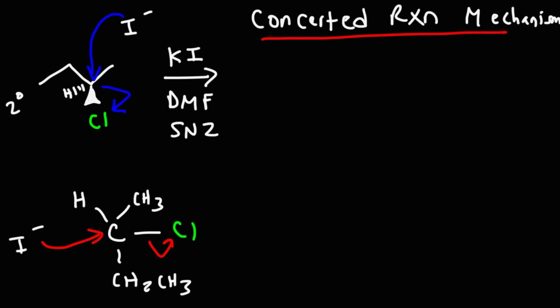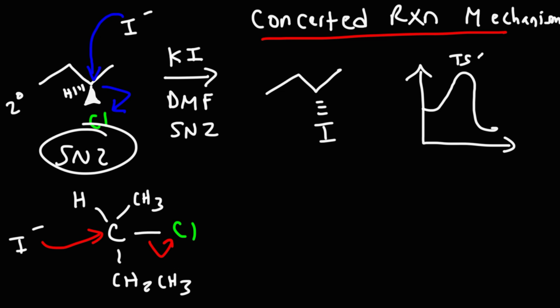Anytime you have an SN2 reaction, you're going to have a concerted reaction because this occurs in a single step. The end result is we get an inverted product, replacing the leaving group with a nucleophile. Because this is a concerted reaction mechanism, there's only one step in this reaction. So if you were to draw the potential energy diagram, you're only going to have one transition state.